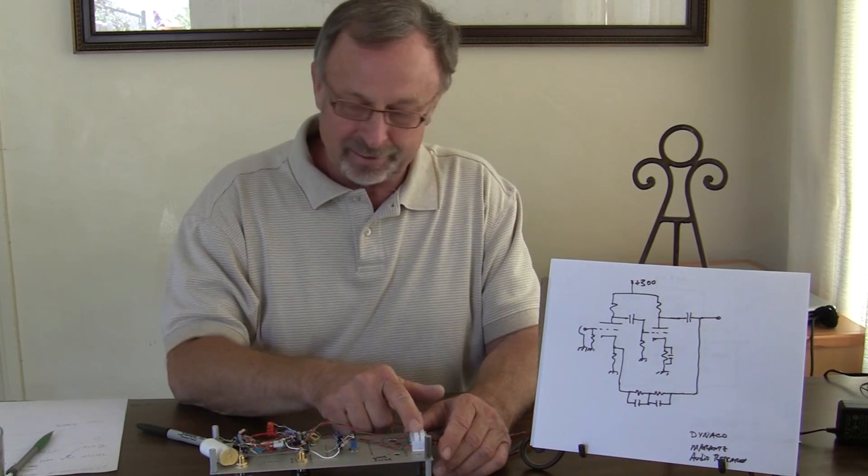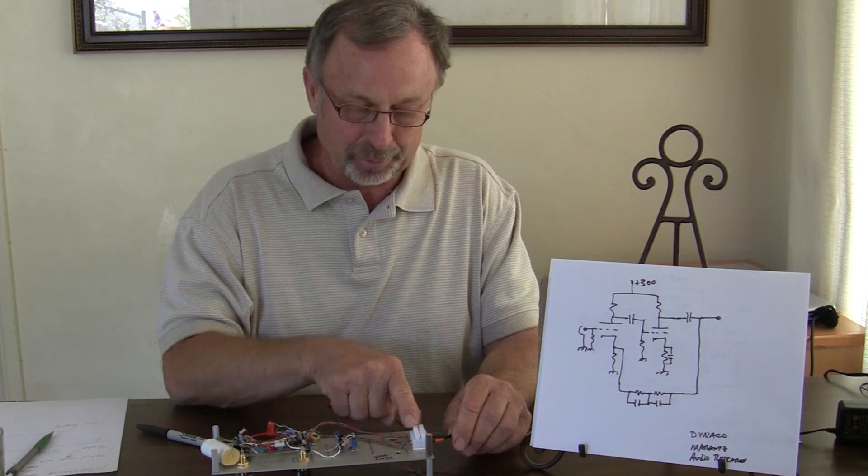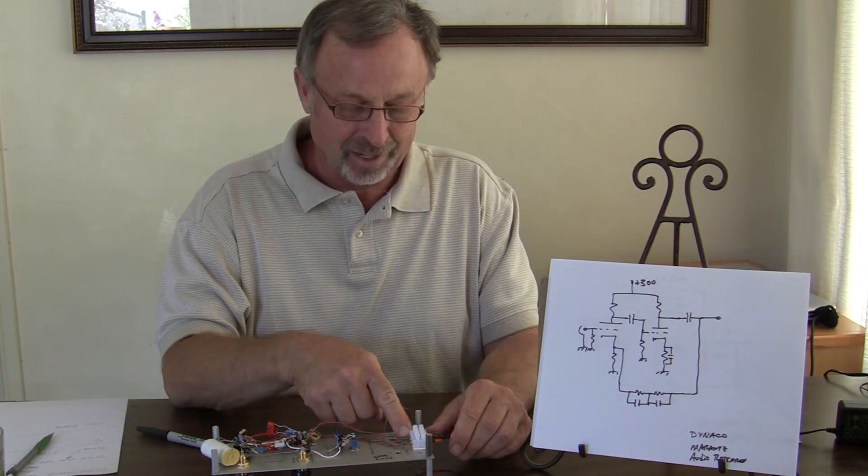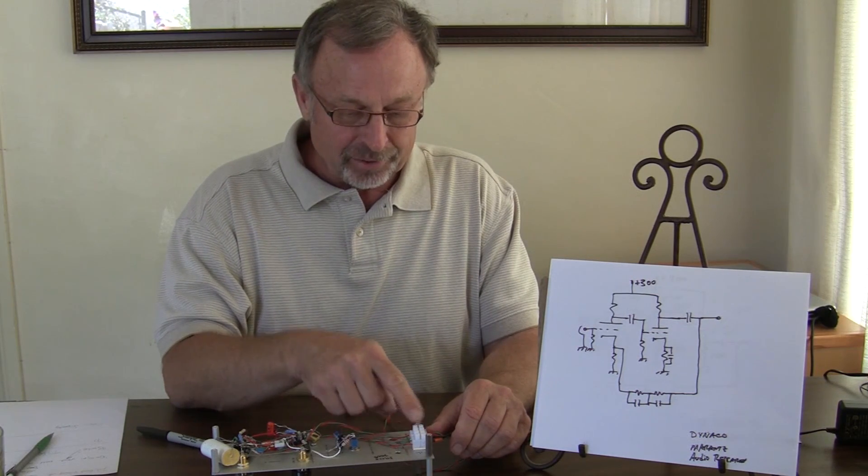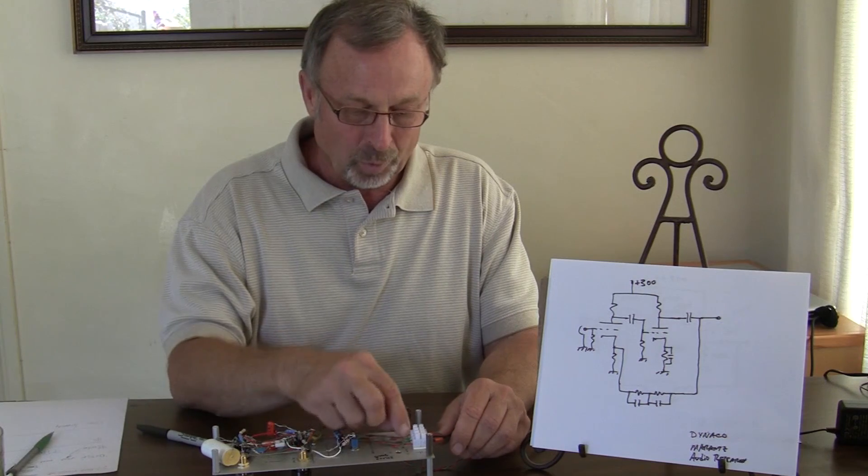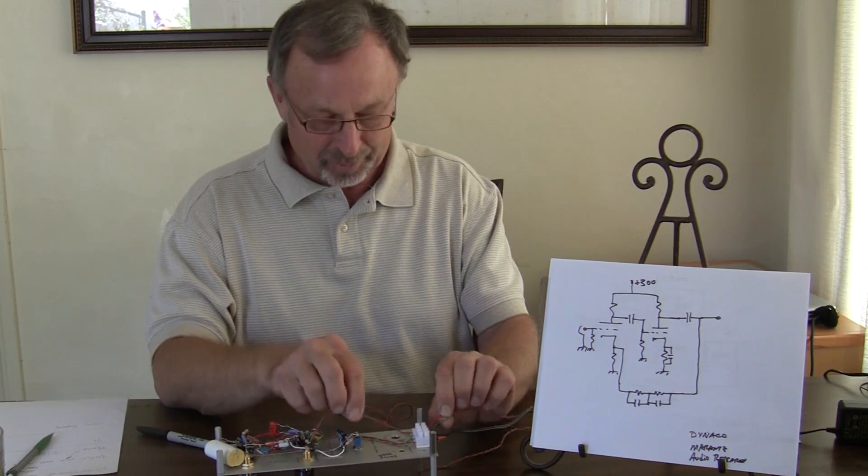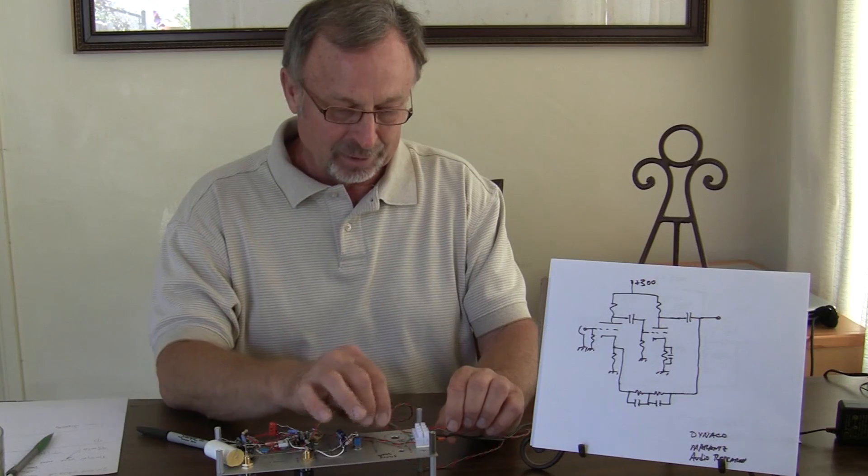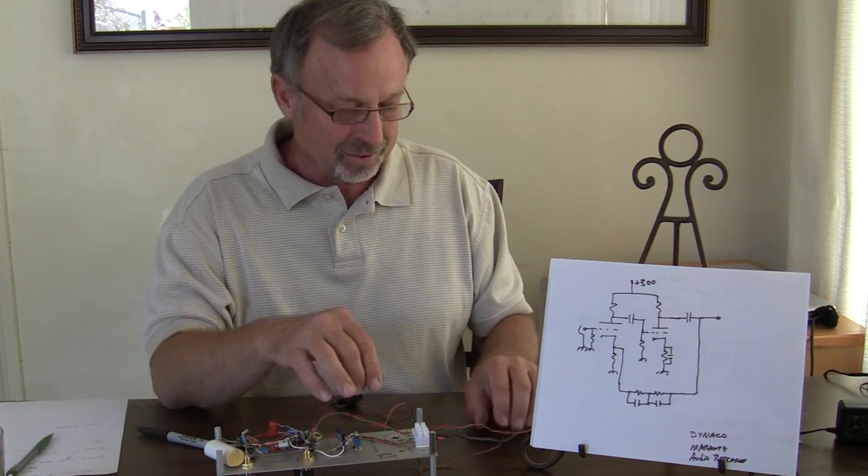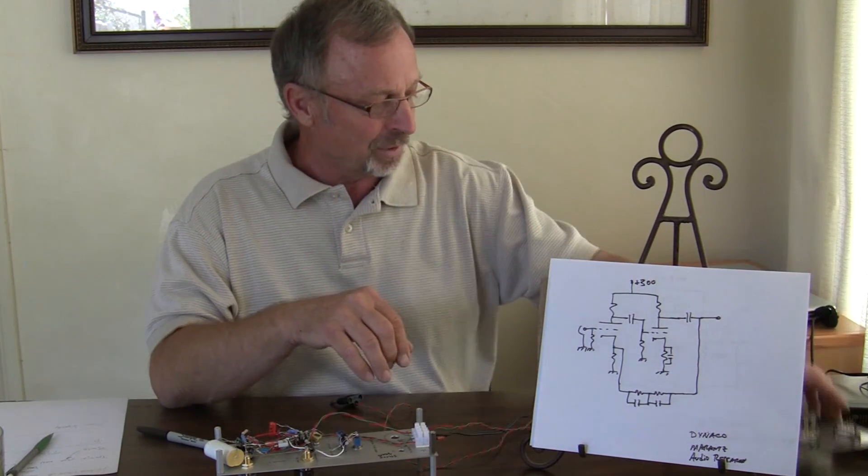Also on the end here, I put a little terminal strip. These are very easily gotten anywhere. They're just screw terminals and you can put one wire on one side and then carry the other wire on the other side. I like to sometimes keep the colors the same. We have red for plus and green for minus here.